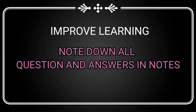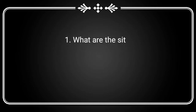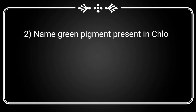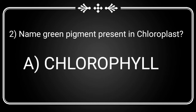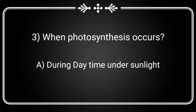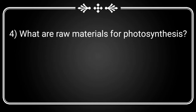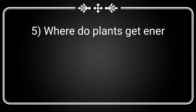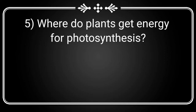Dear students, to improve your learning, note down all the upcoming questions and answers in your notes. What are the sites of photosynthesis? Chloroplasts. Name the green color pigment present in the chloroplasts. Chlorophyll. When does photosynthesis occur? Under sunlight during daytime. What are the raw materials required for photosynthesis? Carbon dioxide and water. Where do plants get energy for photosynthesis? From sunlight.